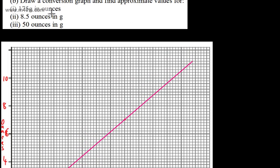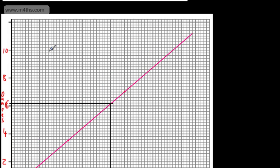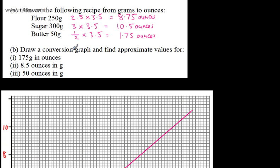So for 175 grams in ounces, I locate 175 grams on the bottom axis, read up to the line, then read across. That gives approximately 6.2 ounces. This is only an approximation — it's only as good as my level of accuracy on the graph.